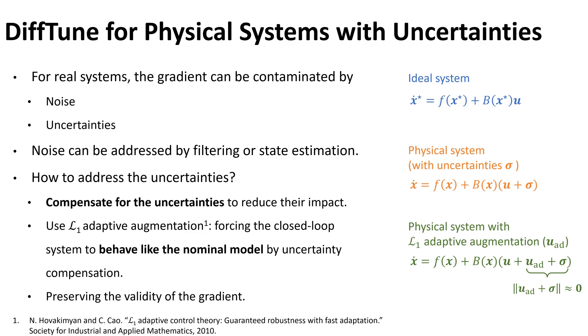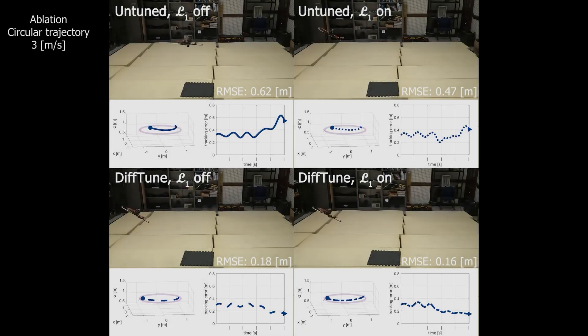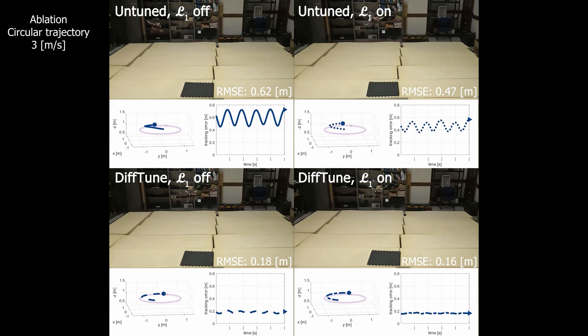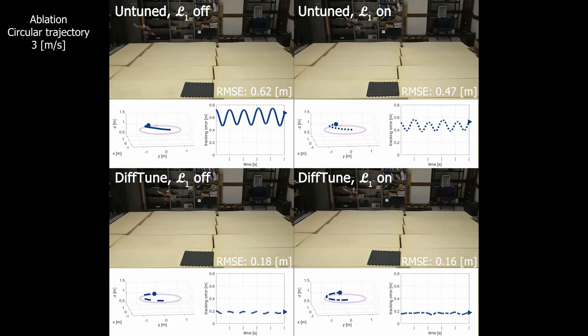We test DiffTune with L1 adaptive augmentation and conducted an ablation study. The ablation study shows that both DiffTune and L1 adaptive augmentation can improve performance with individual contributions. The best performance is achieved when they are applied jointly.